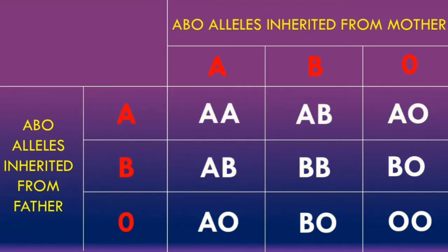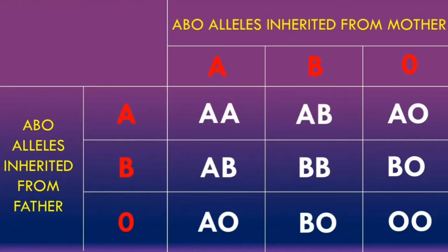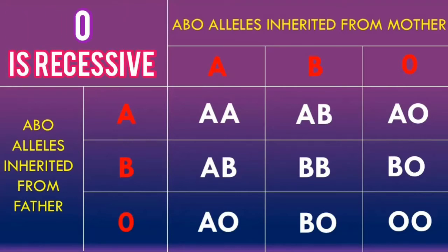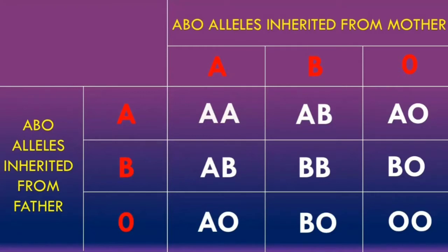The phenotype expressed by each specific genotype determines the ABO blood group of the patient. A key point to never forget is that the A and B alleles are co-dominant, whilst the O allele is recessive to both the A and B alleles. A person with a genotype of AA will have an ABO blood type of A, and a person with a genotype of AO also has an ABO blood type of A, as the A allele is dominant to the recessive O allele.